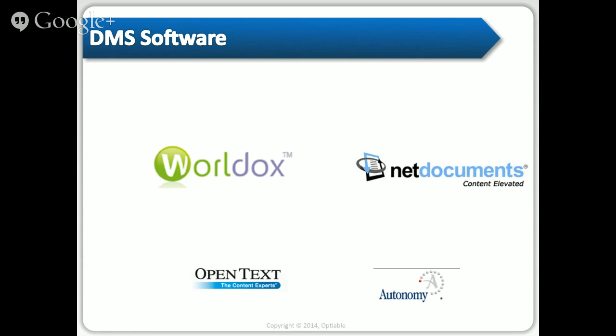Autonomy is the one that used to be called iManage — that company has been sold so many times. It used to be the dominant player and was what we used at the big firm. WorldDocs seems to have occupied that position now, at least if you're going to run your own servers. NetDocuments seems perfectly positioned to capture the cloud-based market. iManage is really going to be for much larger firms — 300 users and above. Other than that, you're going to run into WorldDocs and NetDocuments.